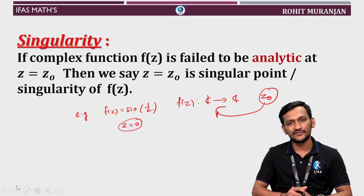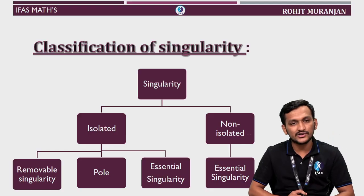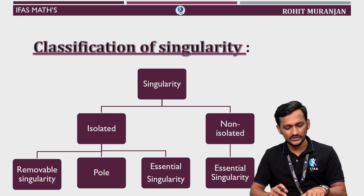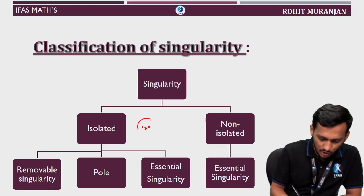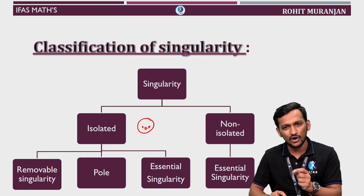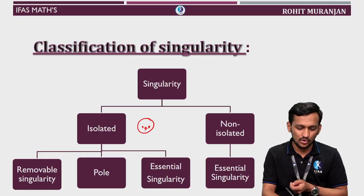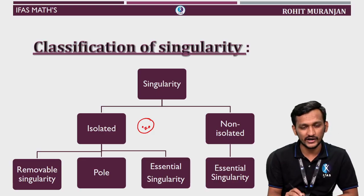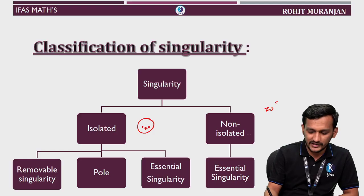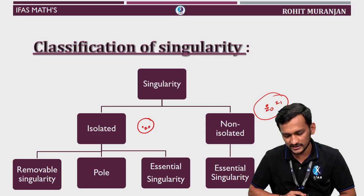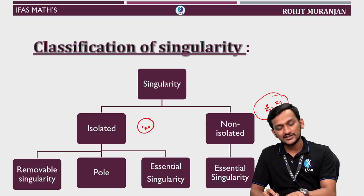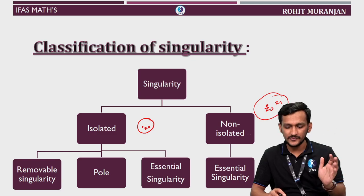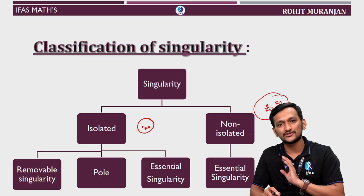Now let's try to understand what are the classifications. Singularities are classified into two categories: firstly, isolated, and secondly, non-isolated. When do we say a singularity is isolated? If in its neighborhood there is no other singularity — no matter how small you consider your neighborhood — if there is no other singularity other than z₀, then we say the singularity is isolated. If there is some other singularity in the neighborhood of z₀, then we say z₀ is a non-isolated singularity because it is not alone.